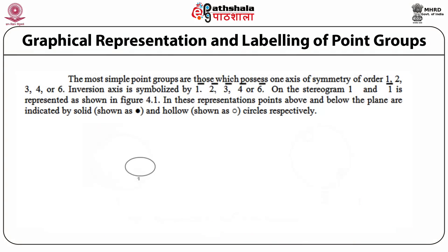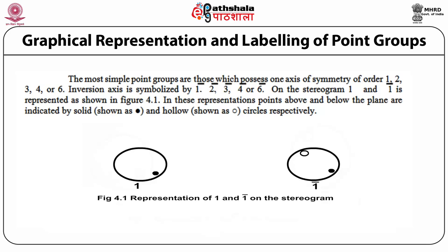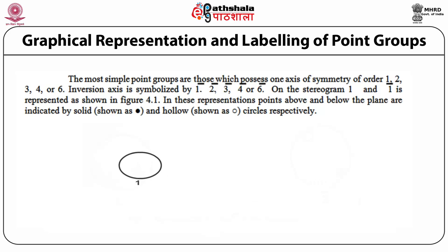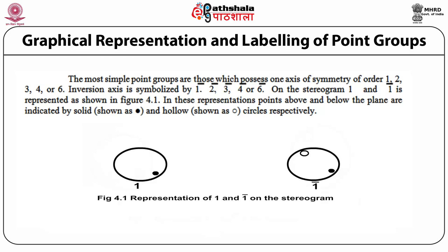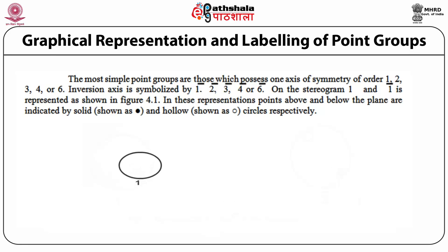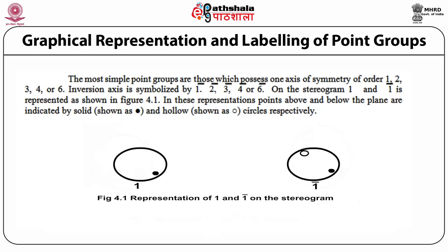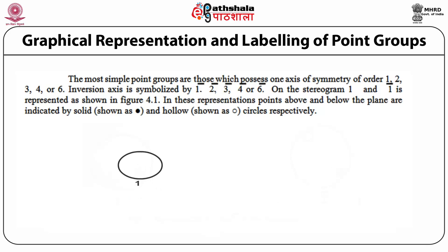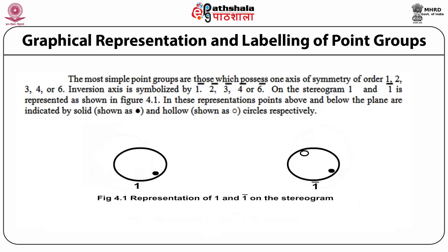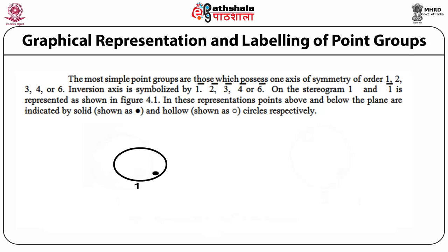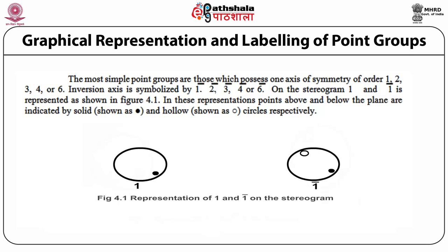The most simple point groups are those which possess one axis of symmetry of order 1, 2, 3, 4, or 6. The inversion axis is symbolized as 1-bar, 2-bar, 3-bar, 4-bar, or 6-bar. On the stereogram, 1 and 1-bar are represented as shown in Figure 4.1. In these representations, points above and below the plane are indicated by solid circles and hollow circles respectively.